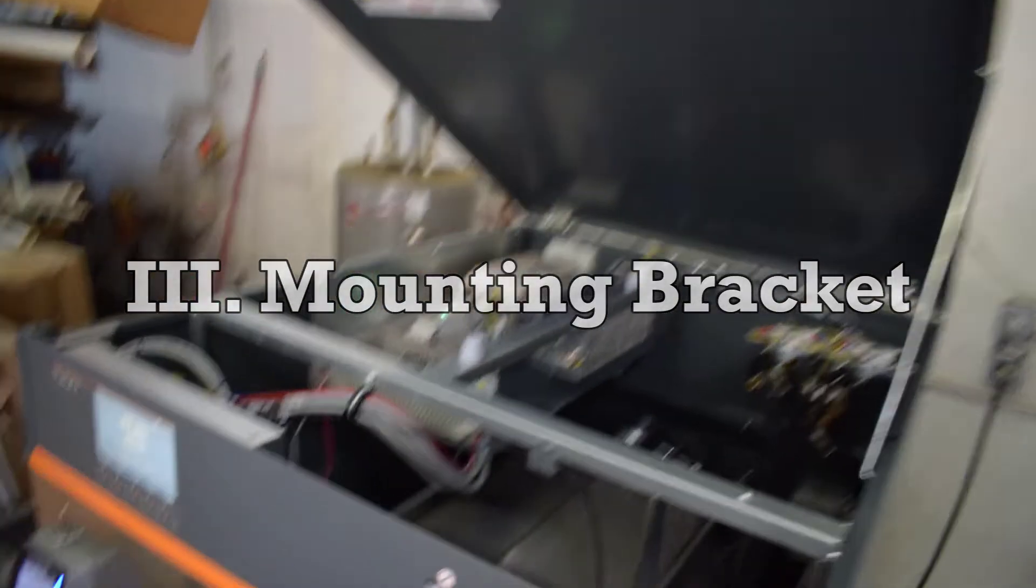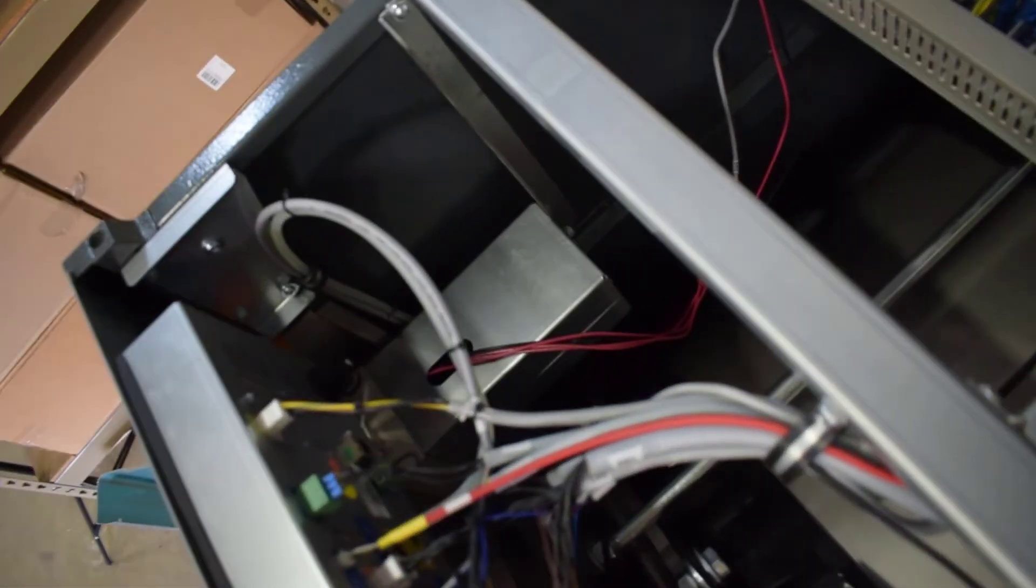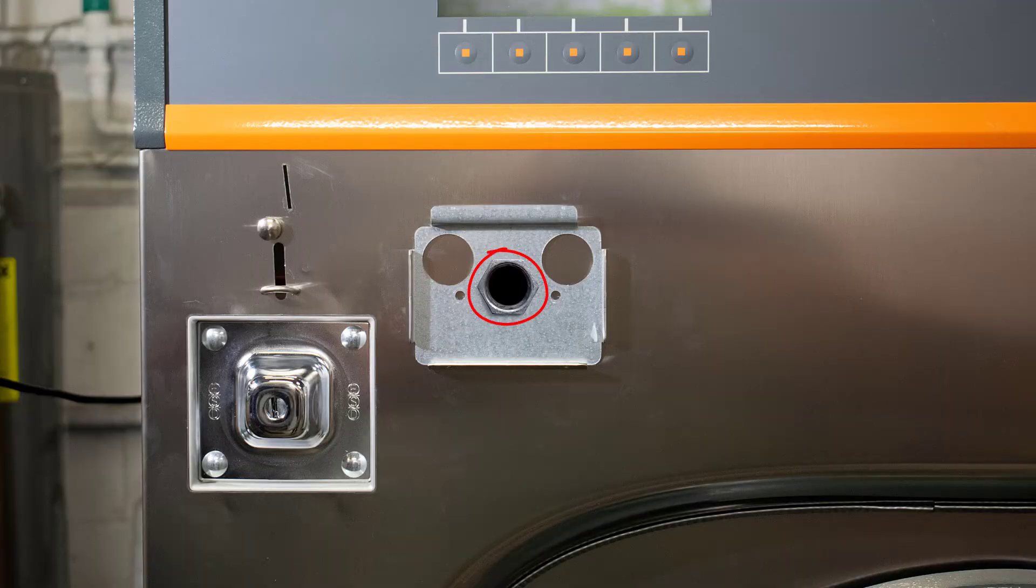Before attaching the mounting bracket, it is recommended to have the harnesses ready to be fed through the center of the bracket for easier installation. In coin and card setups, wherever the panel was drilled into would be where you would feed the harnesses out through.